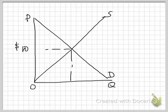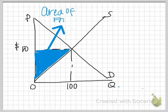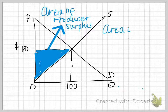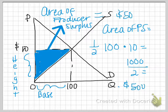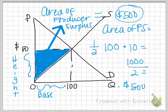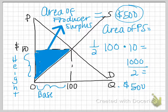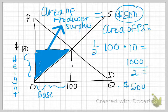Now let's do the same for producer surplus, shaded in blue. The area of producer surplus is one-half times the base, which is the distance along the quantity axis from 0 to the equilibrium of 100, times the height. The height is the equilibrium price of $10 all the way down to the bottom of the supply curve, which goes to 0, giving a height of $10. So one-half times 100 times 10 equals $500. The area of producer surplus in this graph is also $500.